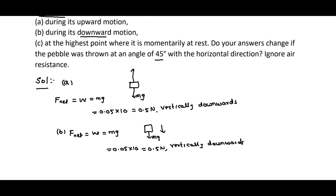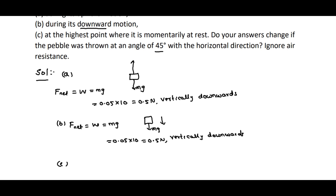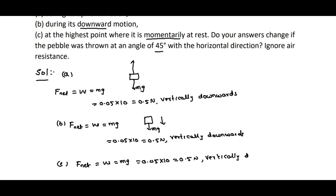At the highest point where it is momentarily at rest: the speed is 0 at that point, but acceleration due to gravity and net force are still present. So F_net equals its weight = 0.05 × 10 = 0.5 Newton, and it acts vertically downwards.